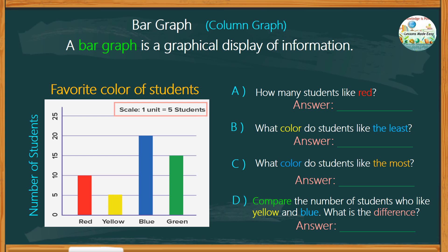Let's start with the first one. How many students like red? There are 10 units for red. And if 1 unit is equal to 5 students, therefore, the total number of students would be 50.